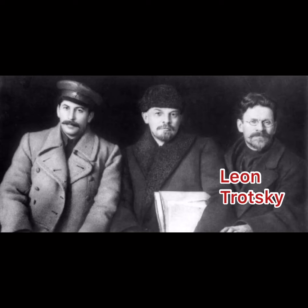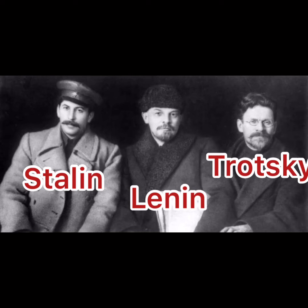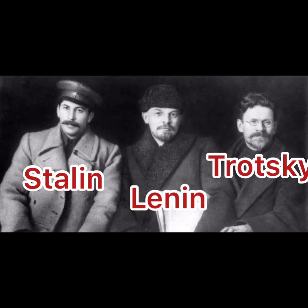Once Lenin was in power, he set up a totalitarian regime where you could not disagree with the government. They used the threat of force, monitored all publications and print, and monitored your daily life using modern technology. They controlled everything: your social life, your economic life, your political life, your religious life — because there was no religion. And they promised this was going to be a utopian, perfect society.